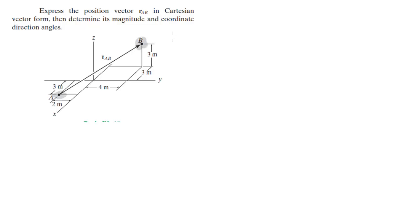Whenever you have this type of problem, the first thing you want to do is find the position vectors for all the points involved. For A, it's 3i minus 2j plus 0k. And for B, it's negative 3i plus 4j plus 3k.